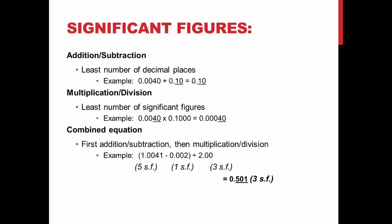When you encounter a combined equation, you first add or subtract, then multiply or divide. For example: 1.0041 minus 0.0041, divided by 2.00. As you can see, there are five significant figures, one significant figure, and three significant figures. This will give you an answer that should be represented in three significant figures.